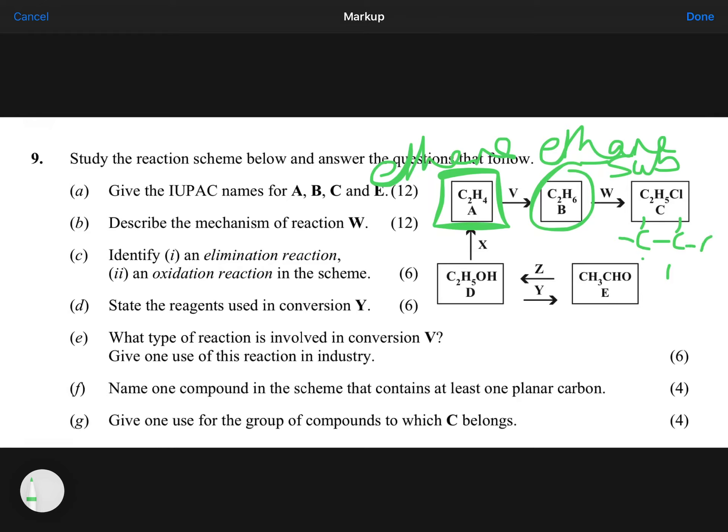Well, it's an alkane because it's all single bonds. It's a chloroethane, isn't it? So that's chloroethane there. So giving the IUPAC names, A is ethane, B is ethene, C is chloroethane, and they also asked you for E, E is ethanol. We had that there previously.